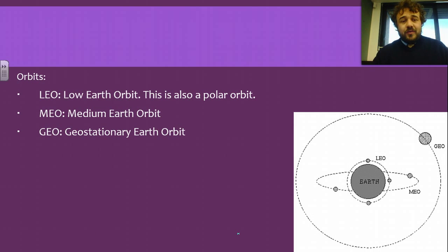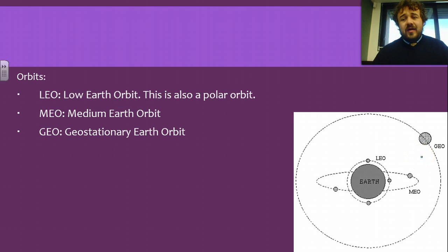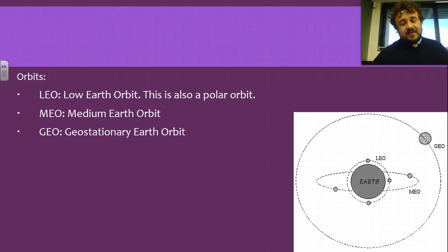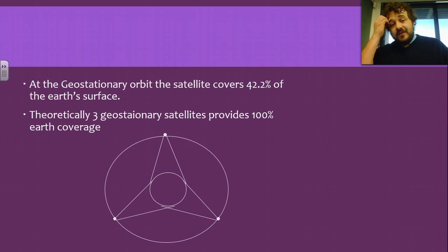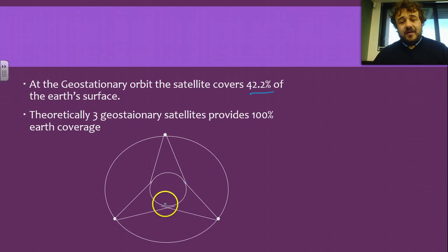There are three orbits we're concerned with. We've got the low Earth orbit, which is polar — it swings around from pole to pole. We've got the medium Earth orbit, which is larger but also a moving satellite — not in one spot at all times. Then we have geostationary, which is always in the same spot above the equator. Given that a geostationary orbit covers about 42% of the Earth's surface, we could use three geostationary satellites to have 100% Earth coverage — each satellite covers its portion, they overlap, and the whole thing is sorted.